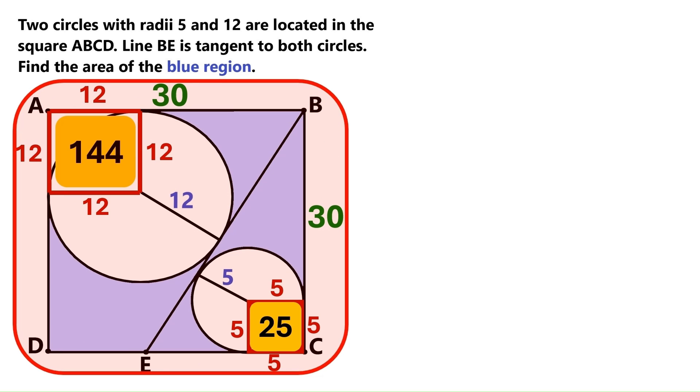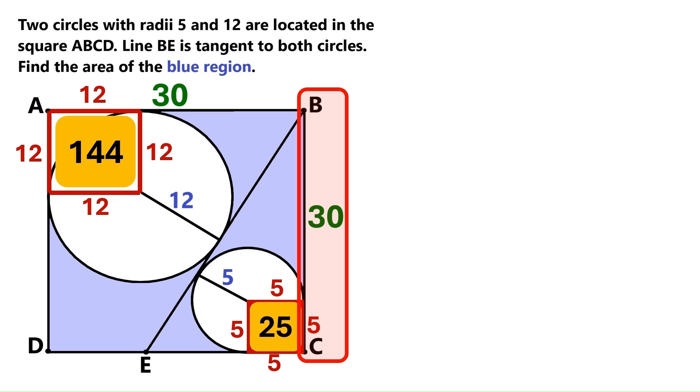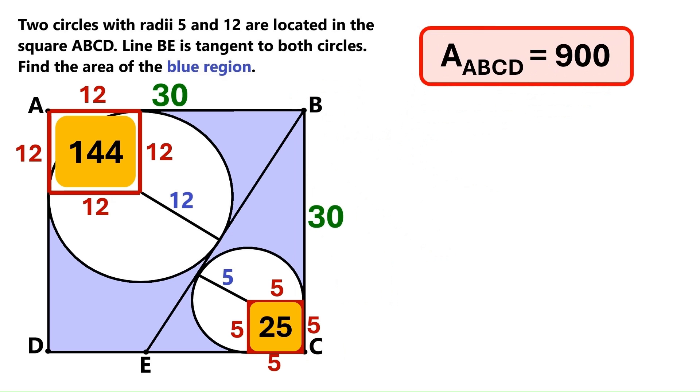And can you find the area of this big square too? Yes! It's side length is 30. And 30 times 30 is 900. Excellent! Thanks for the assistance son!